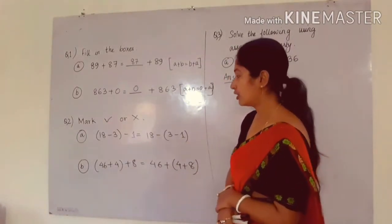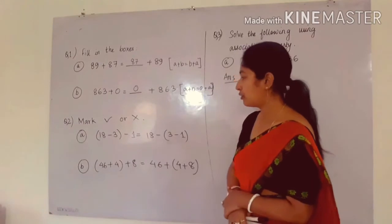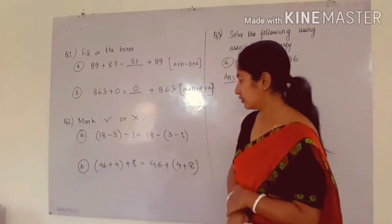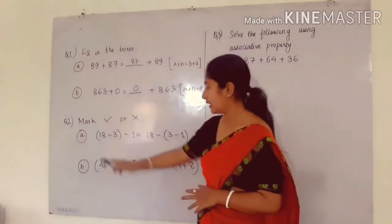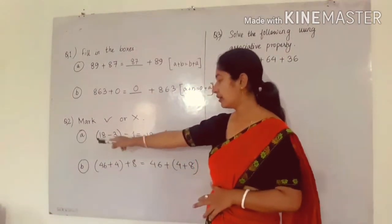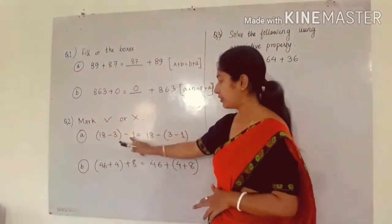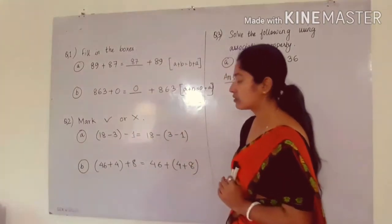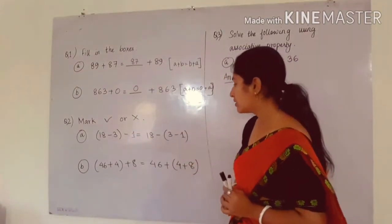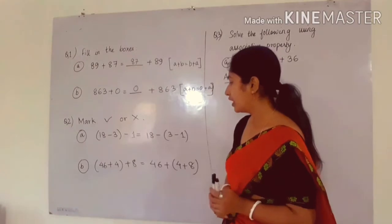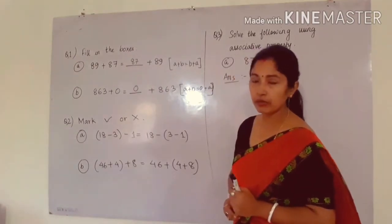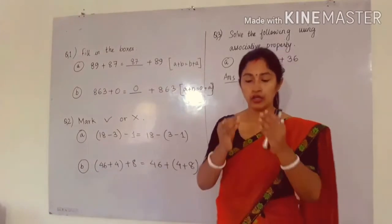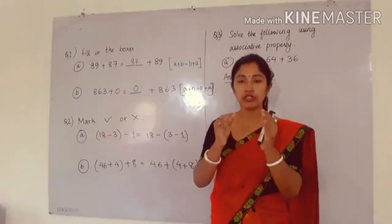Come to the second question. You have to mark true or false. See question number A: 18 minus 3, in bracket, minus 1 is equal to 18 minus, again in bracket, 3 minus 1. We are using here associative property, because in associative property you have to take 3 whole numbers and the 2 whole numbers will be in bracket.